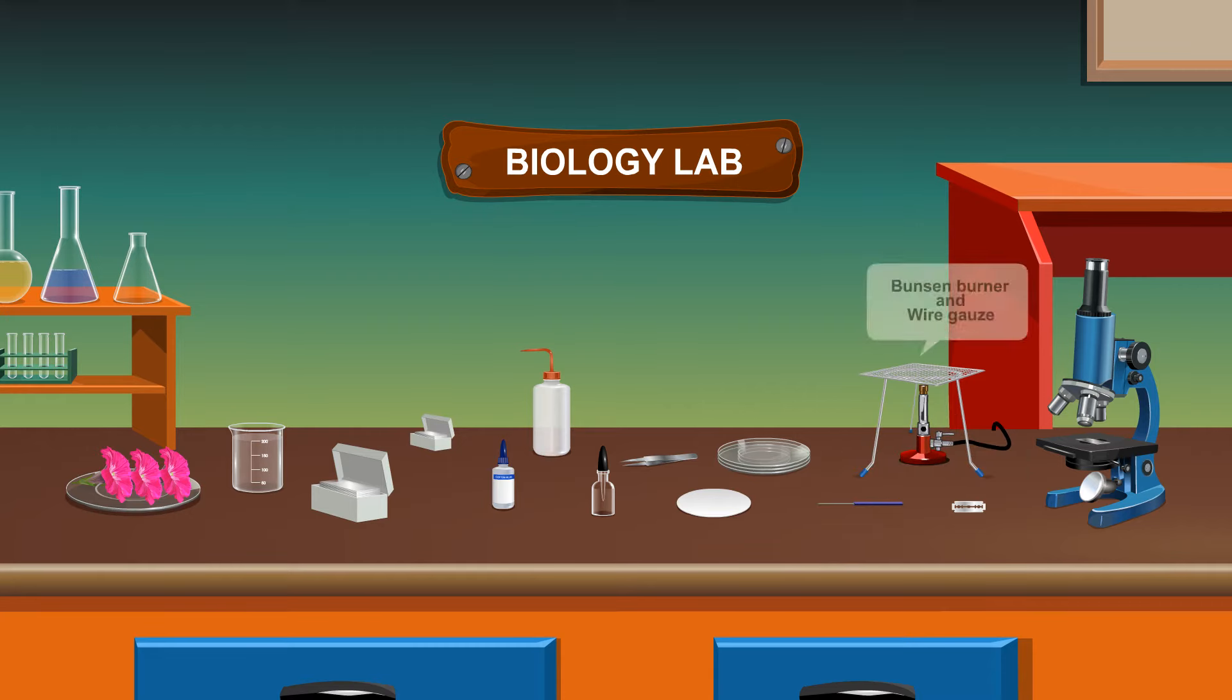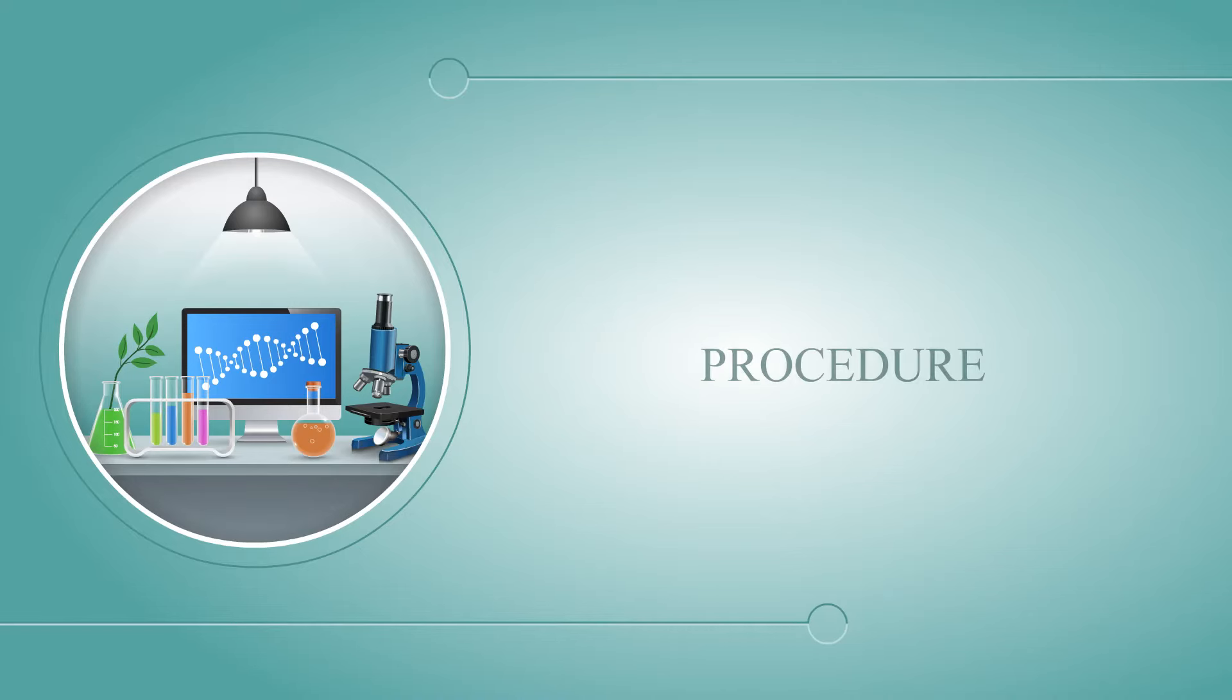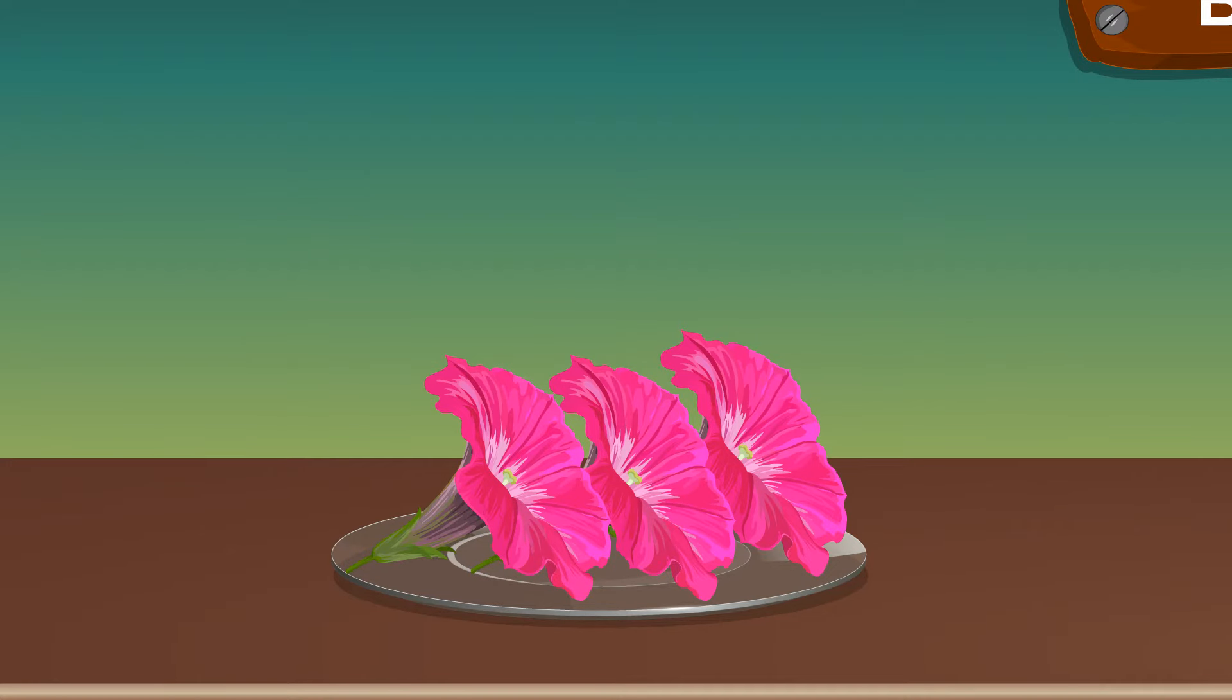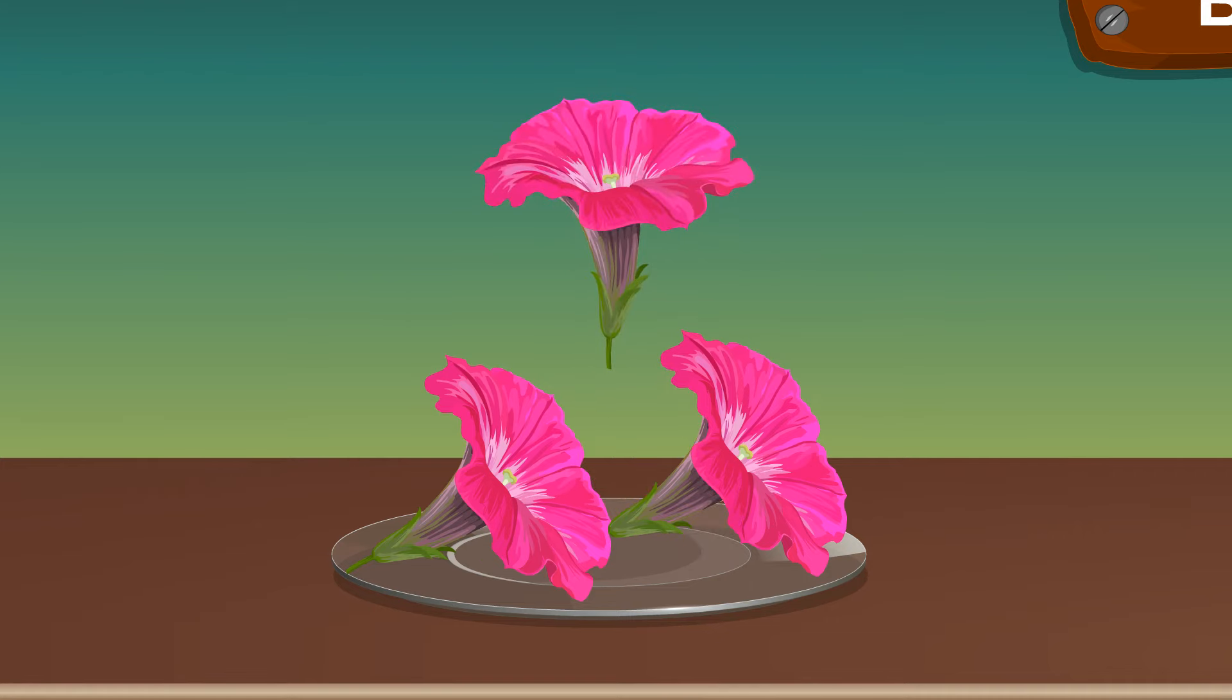Also needed are a blade, bunsen burner with wire gauze, and a compound microscope. Procedure: Take one petunia flower from the watch glass.